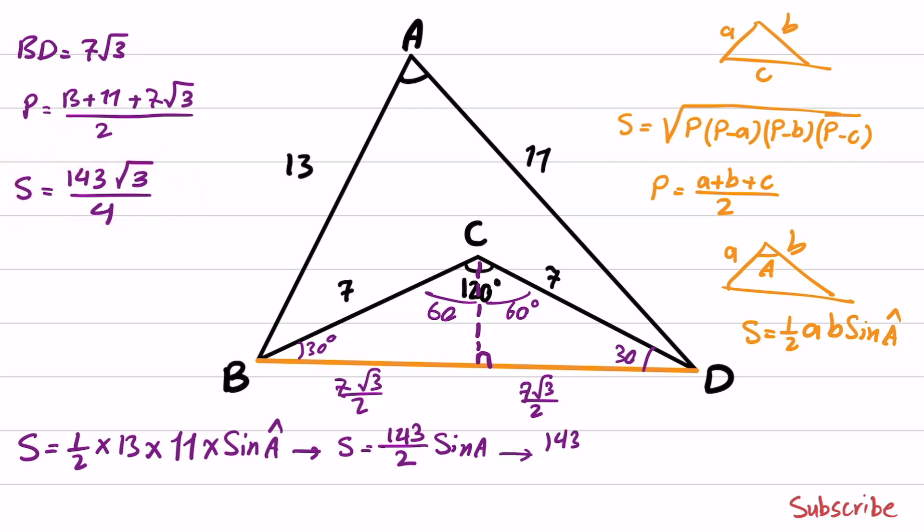So 143 over 2 times sine angle A is equal to 143 times square root of 3 over 4. And from that,